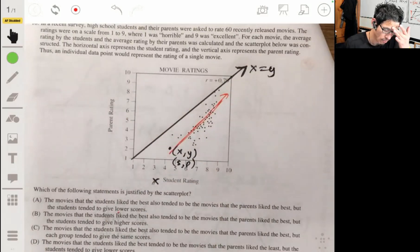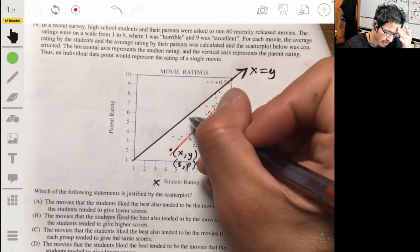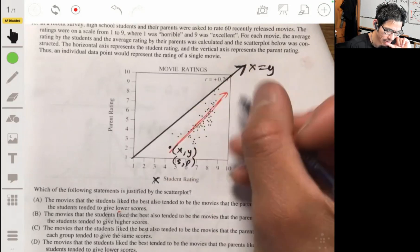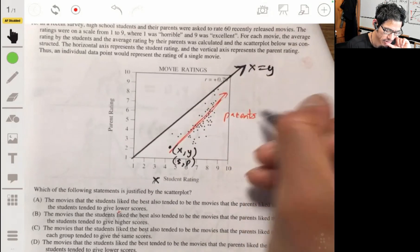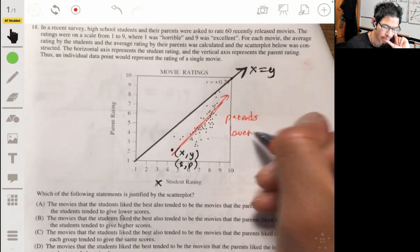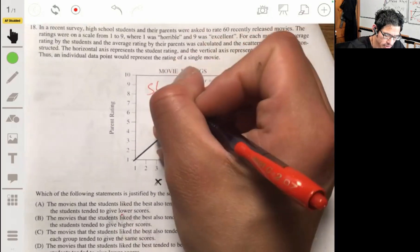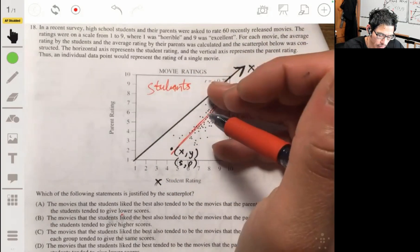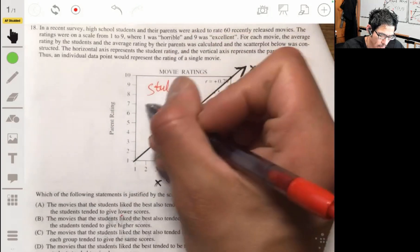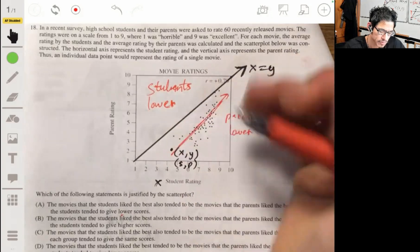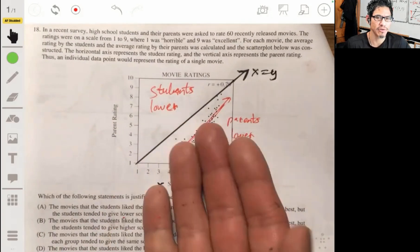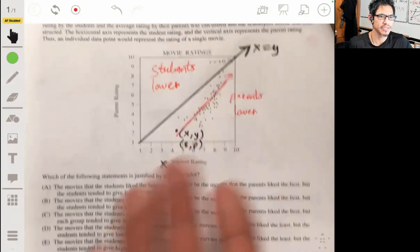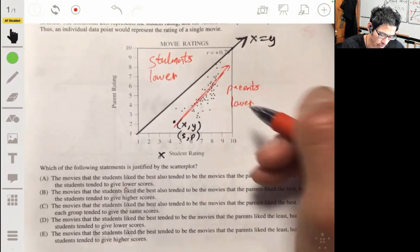Now, if there are points below, that means that the Y coordinate is less than the X coordinate. So below the line, parents are lower. Parents ratings are lower. Above here, the students are lower, or you can say the parents are greater. So points falling in this region, since they're pretty much all below the line, basically, we're going to need to look where it says parents have overall lower ratings.